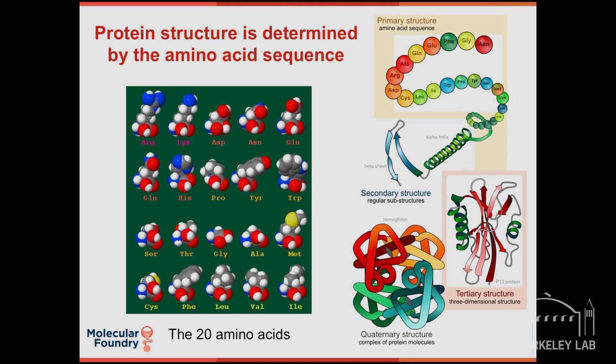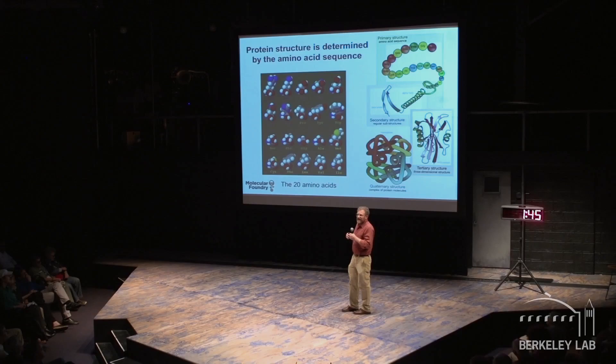The answer is pretty simple: it's about a simple set of building blocks. It's very efficient to build stuff from a common set of building blocks. Here I'm showing the 20 amino acids that represent all the building blocks you need to make any protein in our body. Nature strings them together in a particular sequence, and it's the actual order of monomers in the chain that determines a protein's shape and its function.